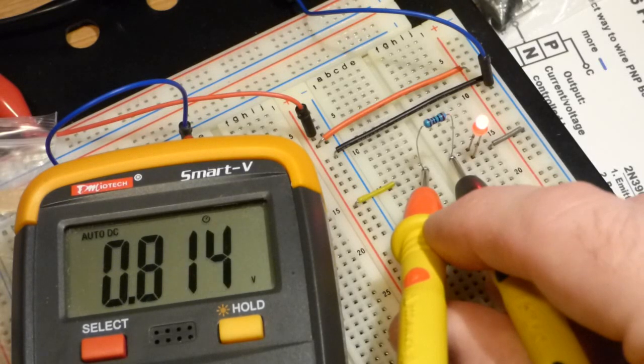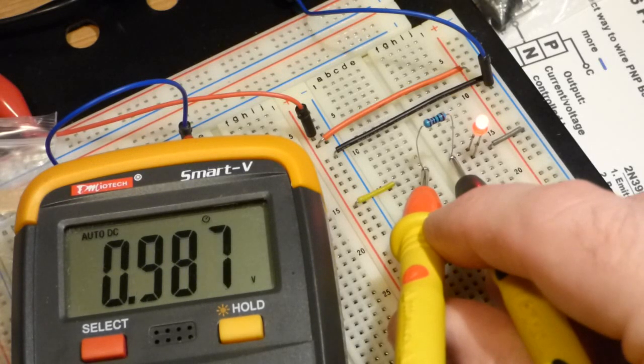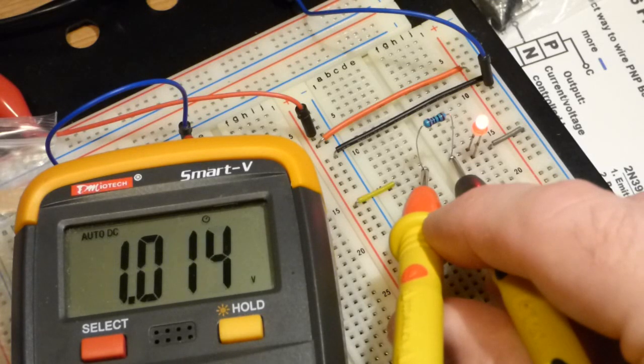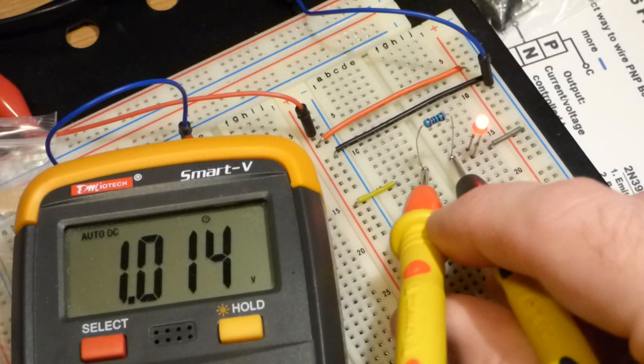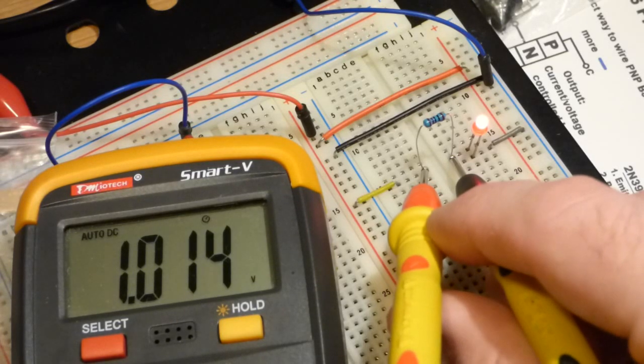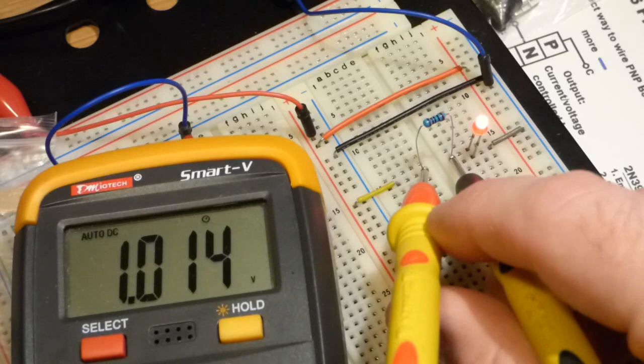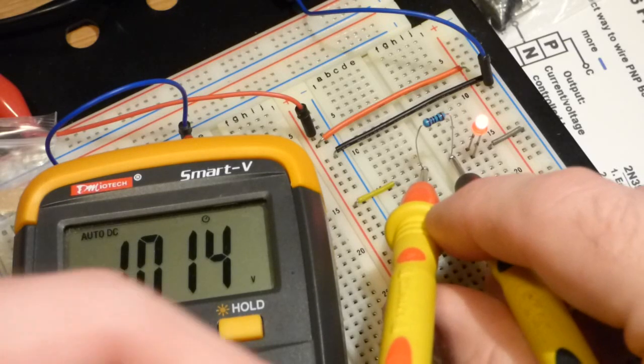This is a one kilo ohm resistor, and so when I have one volt across this resistor, which you can see I'm measuring directly, there we go, just about almost 2% off from 1 volt, so close enough.